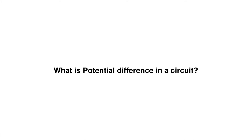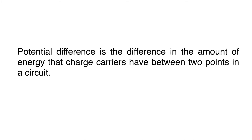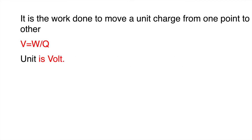Potential difference is the difference in the amount of energy that charge carriers have between two points in a circuit. We can also define it as the work done to move a unit charge from one point to another. The formula is V = W/Q, where V is potential difference, W is work done, and Q is charge. The unit of potential difference is volt.